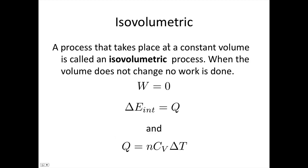An isovolumetric process is one that takes place at constant volume. When the volume does not change, no work is done. So work is equal to zero. And the change in internal energy from the first law of thermodynamics is just equal to the heat flow. We saw last lecture that the heat flow is equal to n C_V delta T.